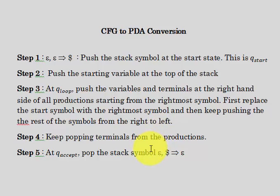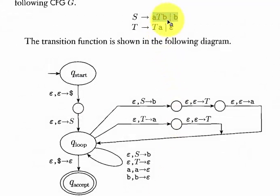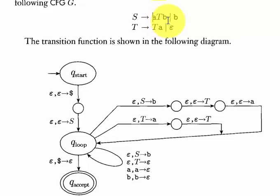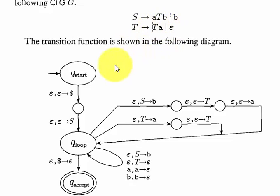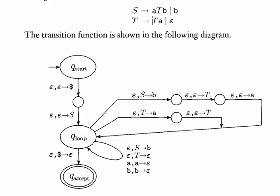What this means is: here we first replace the start symbol with lowercase b, then we push T, then we push A. The same goes for T — we first replace uppercase T with lowercase A, then we push capital T. Let's look at the diagram, which makes it simpler.